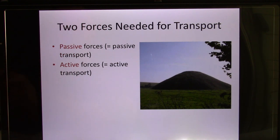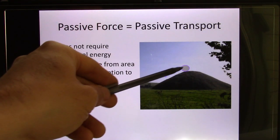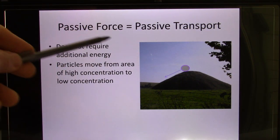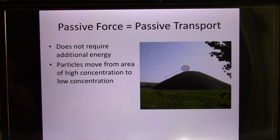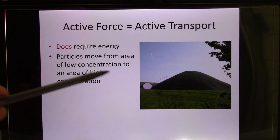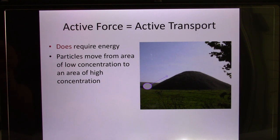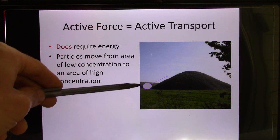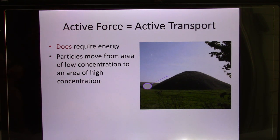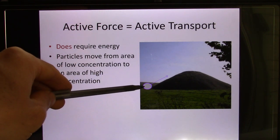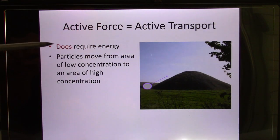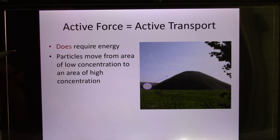Passive force is like putting molecules on top of a hill — they naturally move down. So this is passive transport, driven by the concentration gradient. But if you move molecules from low to high concentration, you are working against the concentration gradient — we call this active force. The cells, if they need to move a molecule from low to high concentration, need to use energy — that's the ATP we talked about earlier. We call this active transport.